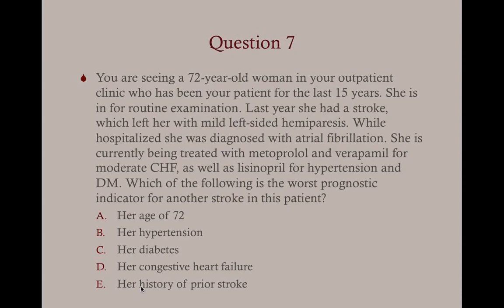Question seven: A 72-year-old woman in your outpatient clinic for routine examination. Last year she had a stroke leaving mild left-sided hemiparesis; while hospitalized she was diagnosed with atrial fibrillation. She's currently treated with metoprolol and verapamil for moderate congestive heart failure, lisinopril for hypertension and diabetes mellitus. Which of the following is the worst prognostic indicator for another stroke? A, age 72; B, hypertension; C, diabetes; D, CHF; or E, history of prior stroke? The answer is E — her history of prior stroke.